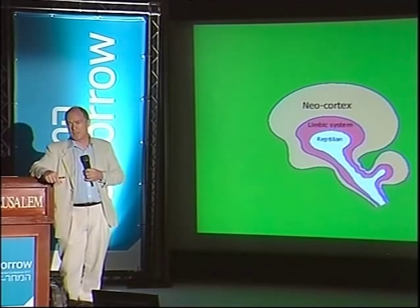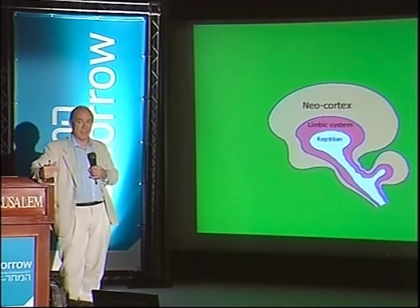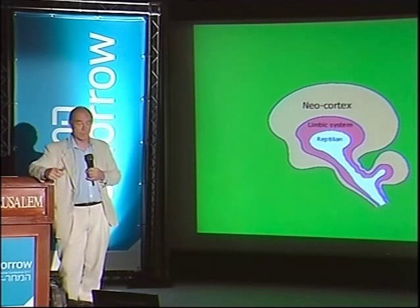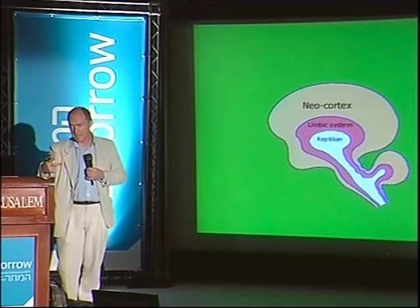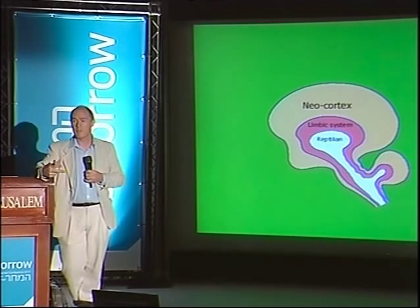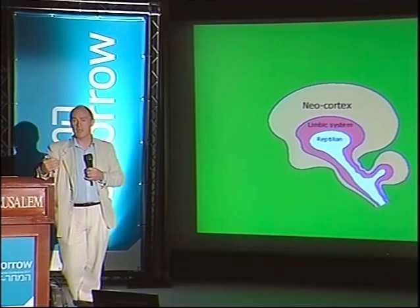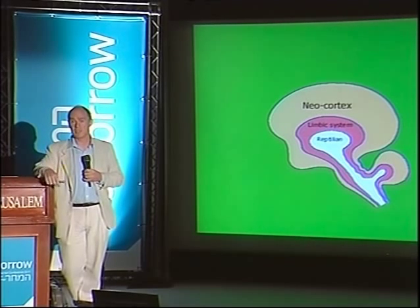Same with the limbic system. This is an invention of psychologists in the 1950s, and it was a very useful simplification, but it was a simplification. We now know from a lot of brain research that structures which were formally assigned to this limbic system, like the hippocampus, are crucially important for the development and consolidation of memory.